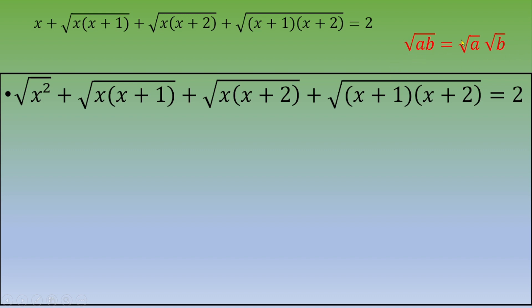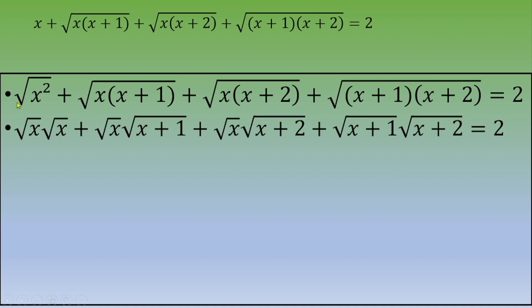Now we apply the product rule: √(ab) = √a · √b. So we expand and get √x·√x plus √x·√(x+1) plus √x·√(x+2) plus √(x+1)·√(x+2), and this equals 2.